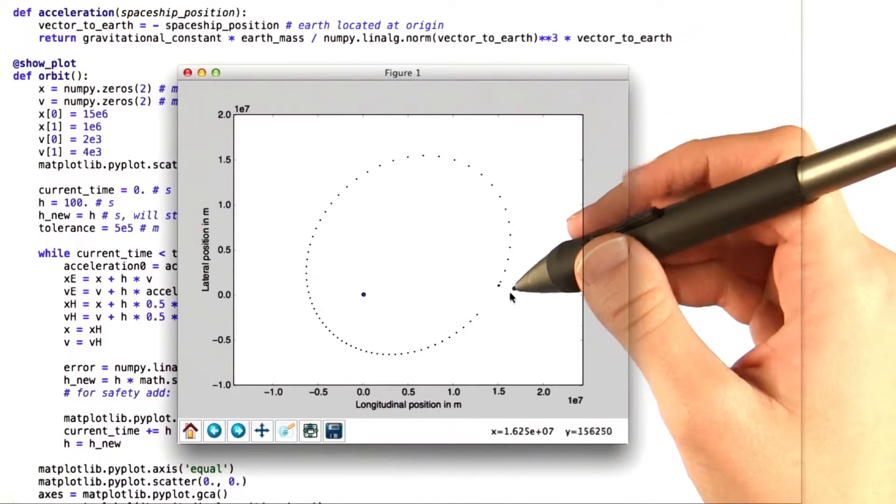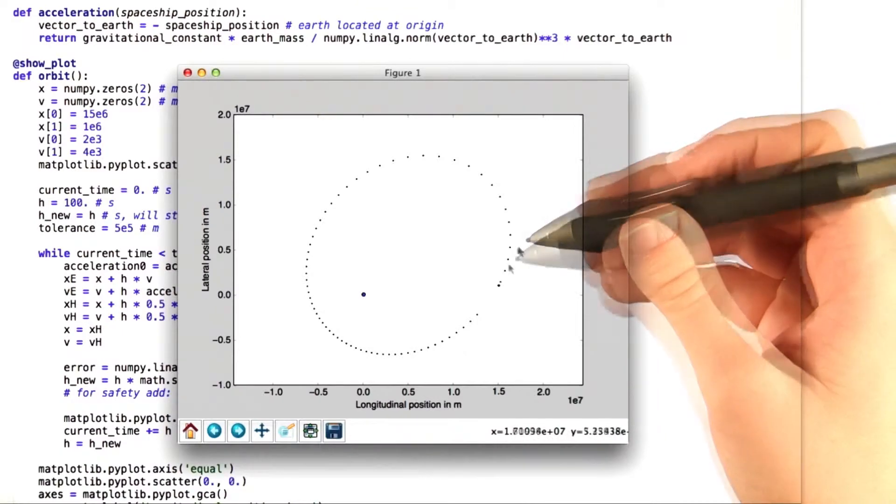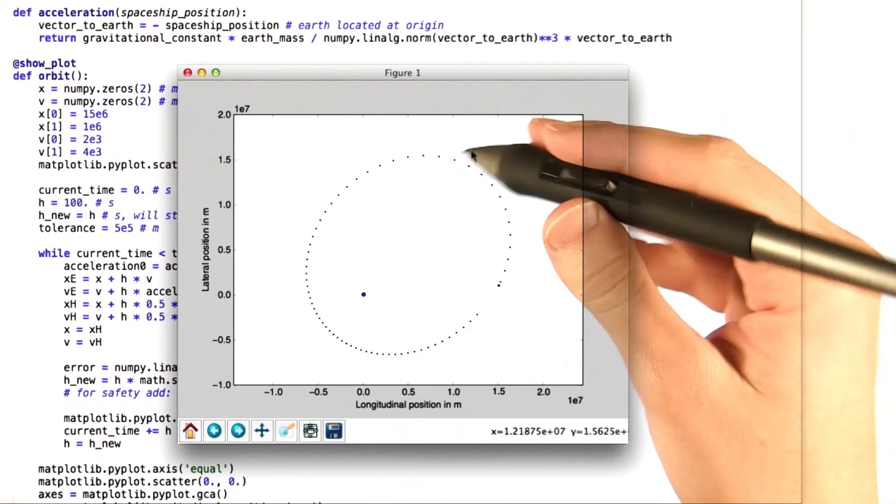One last thing that we can notice here is that the very first step size is small because we initially set h to 100 seconds. Then the method automatically chooses a larger one as we can see right here, and then it keeps that larger one.